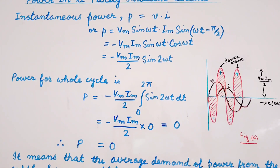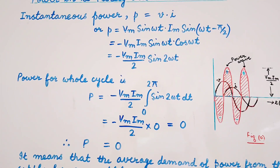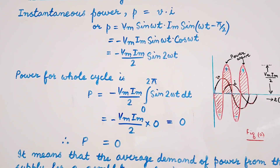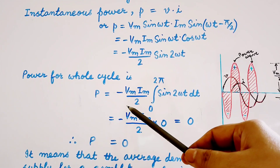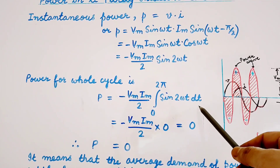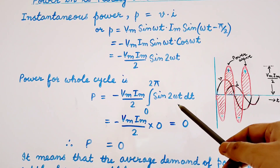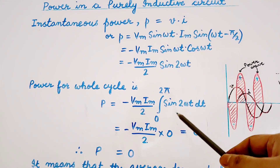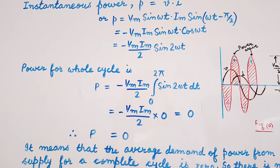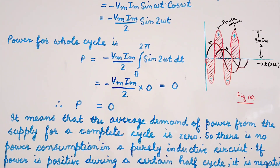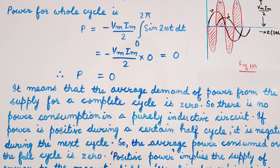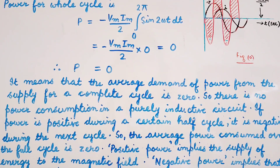Now if we want to calculate the power for the whole cycle, we integrate this equation from 0 to 2π. So the average power P equals −VmIm/2 times the integral of sin(2ωt) dt from 0 to 2π. Carrying out this integration gives 0. So the average power demand from the supply for one complete cycle is 0, meaning there is no consumption of power in a purely inductive circuit.